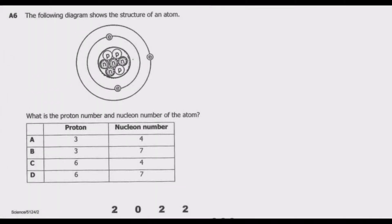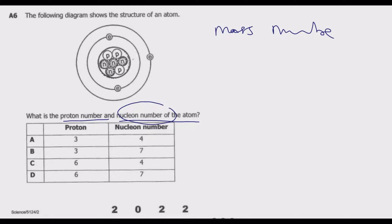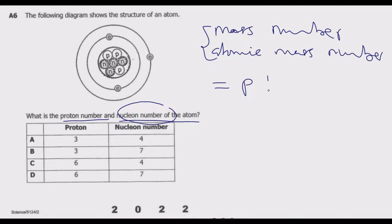The following diagram shows the structure of an atom. What is the proton number and nucleon number of the atom? The nucleon number is also known as mass number, or atomic mass number. These refer to the total number of protons and neutrons in a given nucleus of an atom. In a neutral atom, the number of protons is equal to the number of electrons.